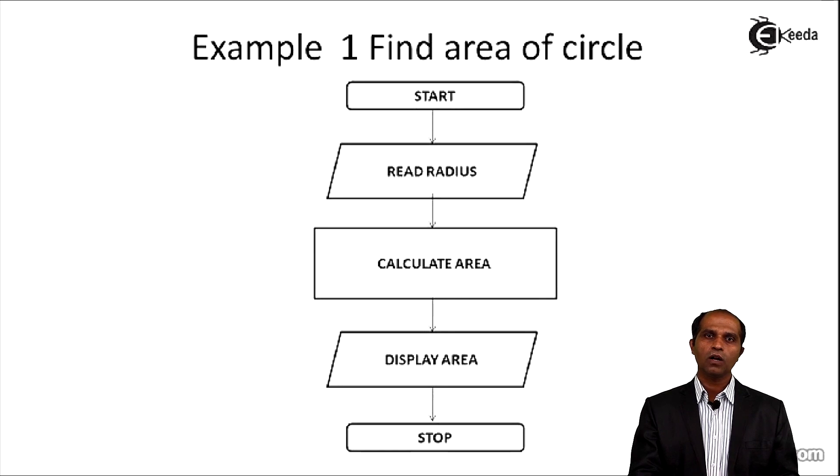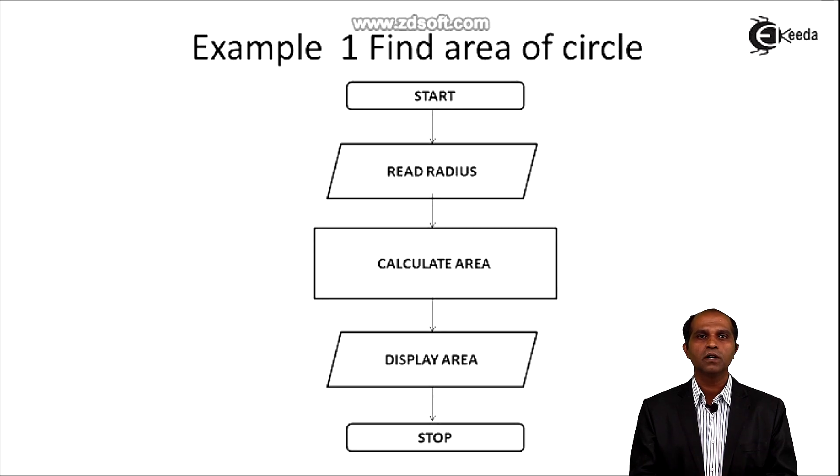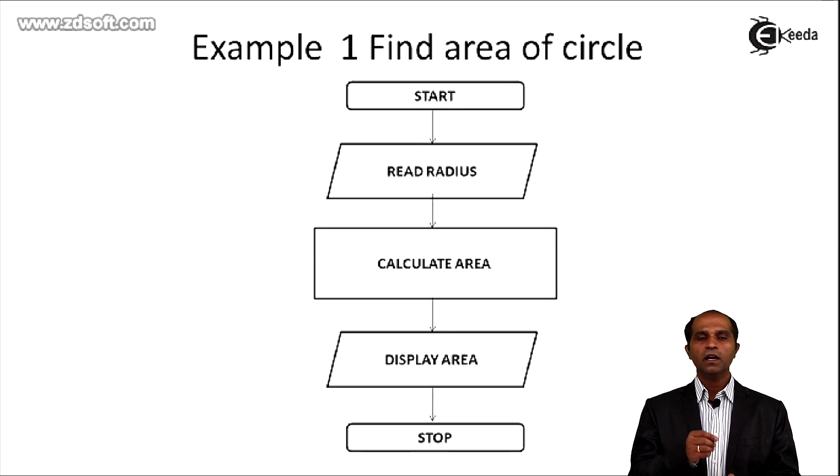The input says that you are supposed to read radius. The parallelogram says read radius. In some conventional flowcharts, we can use even variables to represent this radius, so you can say read radius bracket r. So you can have r to represent the radius as an identifier.